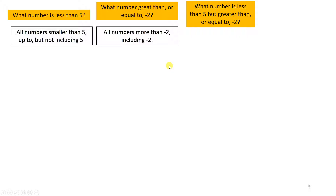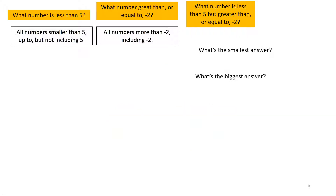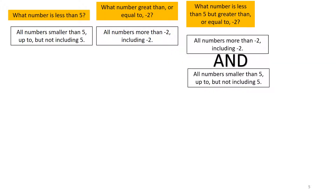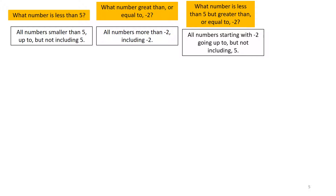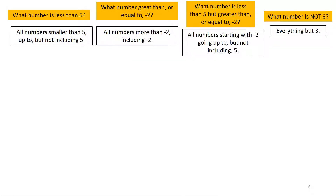We're going to work through the whole way. This third one is a combination of the first two, so we're going to run them through the whole thing and get them to see that this third question — what number is less than five but greater than or equal to negative two — is a combination of the first two. And the fourth one is really strange: what number is not three? We're going to help them articulate in English all four of those answers. If you feel the students need more of this, you can give them more. If they've got it, then this would be sufficient.